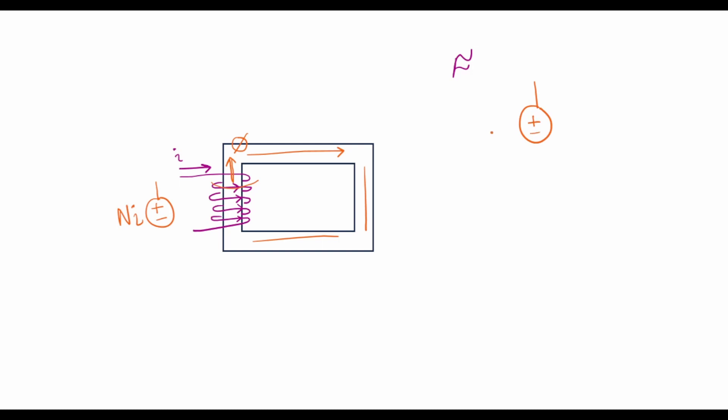So in this circuit NI and then a reluctance R with a flux that flows like this. Just like Ohm's law, we can write the expression F is equal to flux times the reluctance.